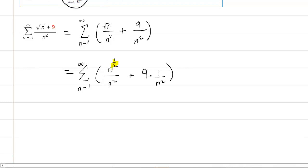When dividing, we subtract the exponents. 1/2 minus 2 is negative 1.5 or negative 3/2. So we can rewrite it as such.